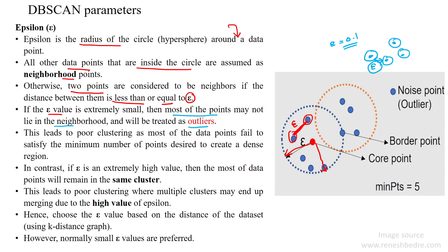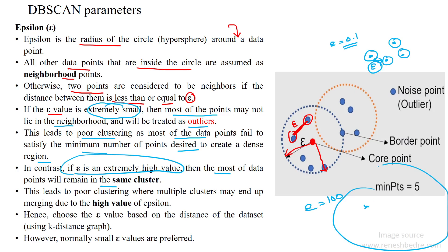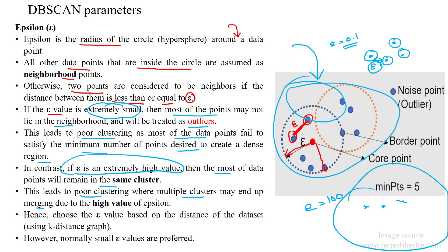A data point that does not fall within the epsilon distance is called an outlier. A small value of epsilon leads to poor clustering, as most data points fail to satisfy the minimum number of data points required to create a dense region cluster. In contrast, if epsilon is extremely high — say 100 — most data points will remain in the same single cluster, which is also poor clustering, as multiple clusters may merge together.